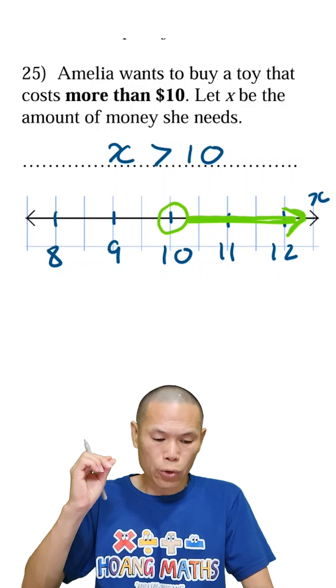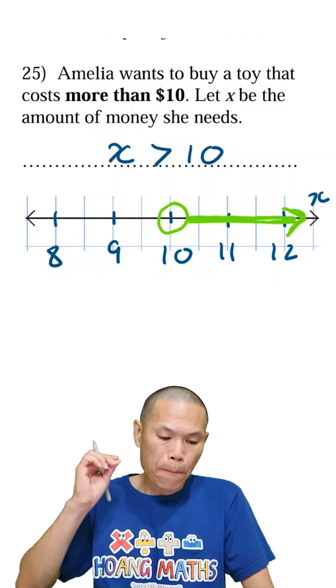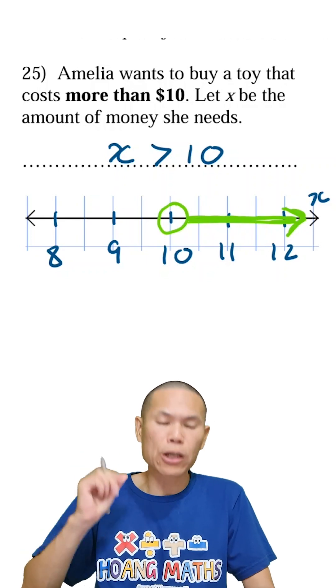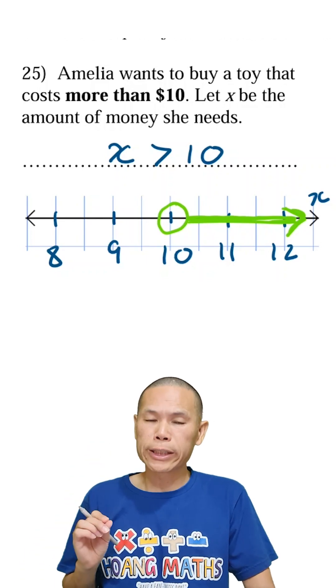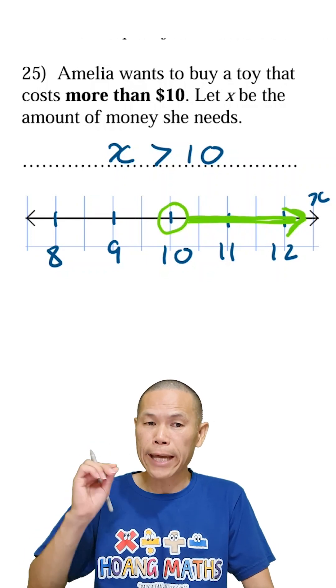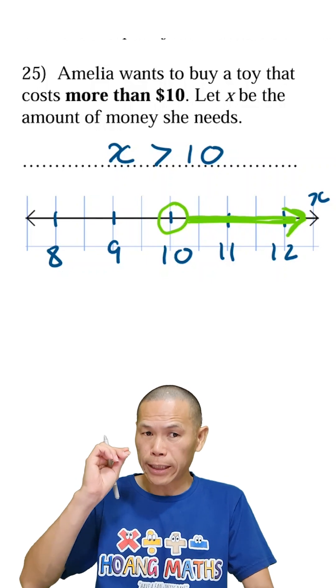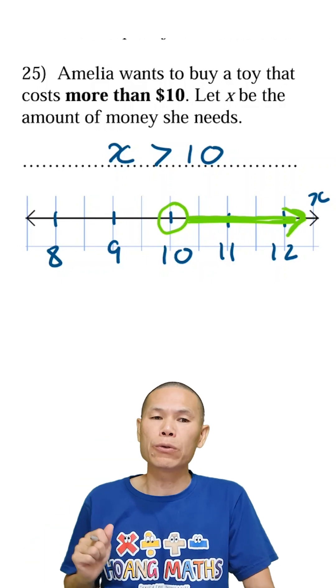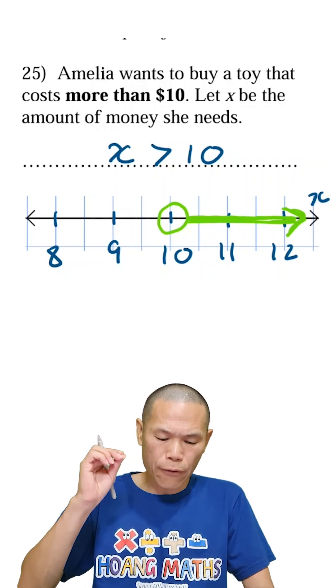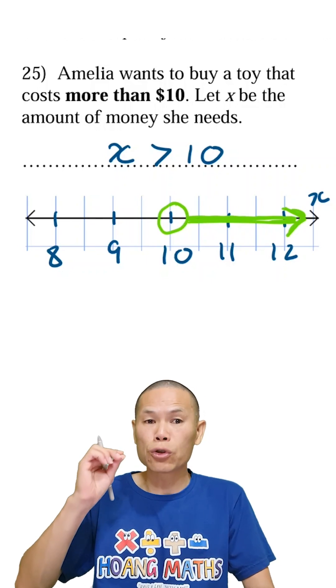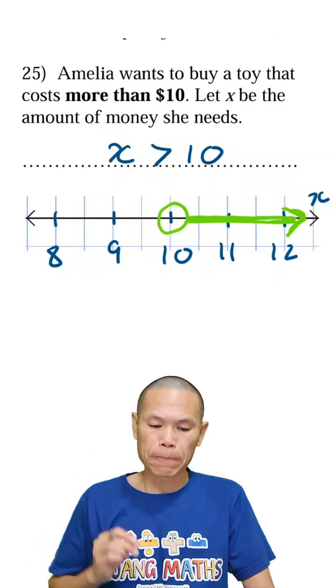Not including 10 — more than $10 means not including 10. Since 10 is equal to 10, it is not more than 10. Therefore, the circle at 10 should be empty — an open circle.